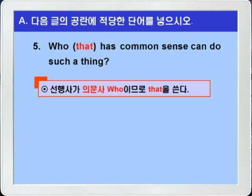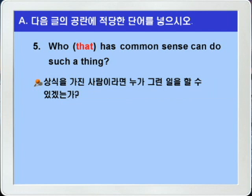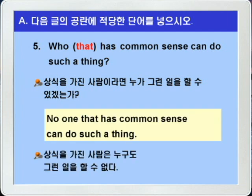5번입니다. 블랭크에는 선행사가 사람이니까 주어에 해당되는 주격 관계대명사 that이 들어가면 되겠습니다. 'Who that has common sense' — common sense가 상식이란 뜻이니까 — '상식을 가진 사람이라면 누가 can do such a thing, 그런 일을 할 수 있겠는가?' 다시 말해 'No one that has common sense can do such a thing', 상식을 가진 사람은 누구도 그런 일을 할 수 없다, 이런 뜻이 되죠.